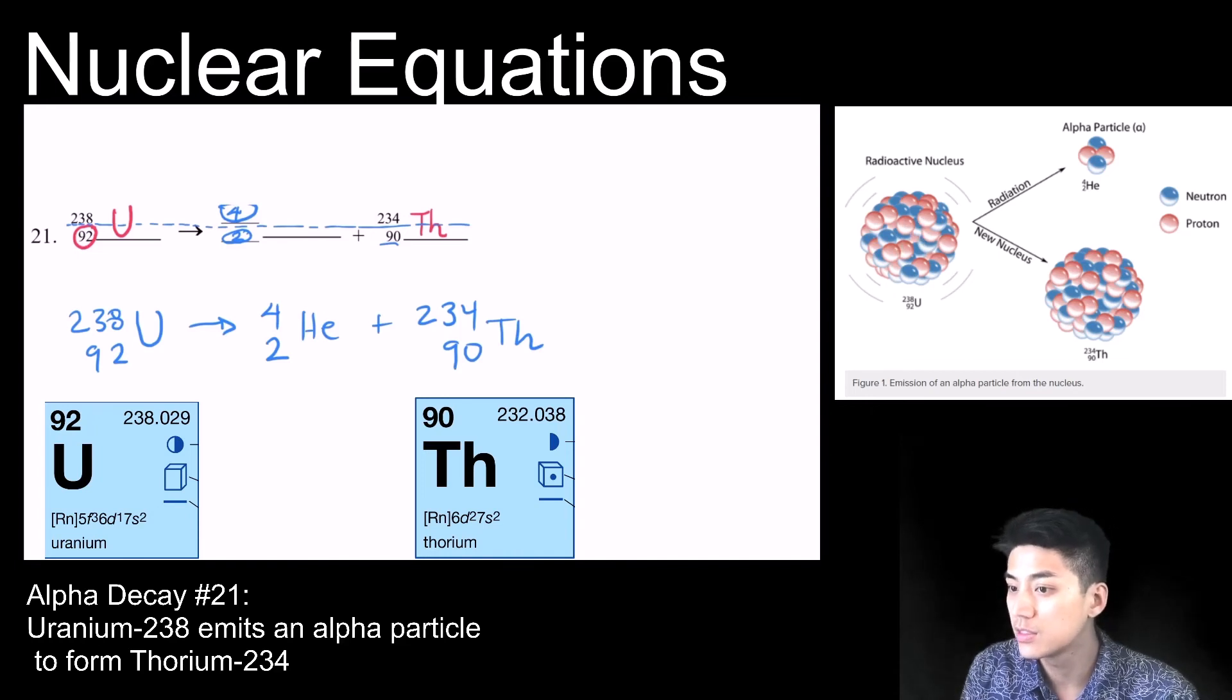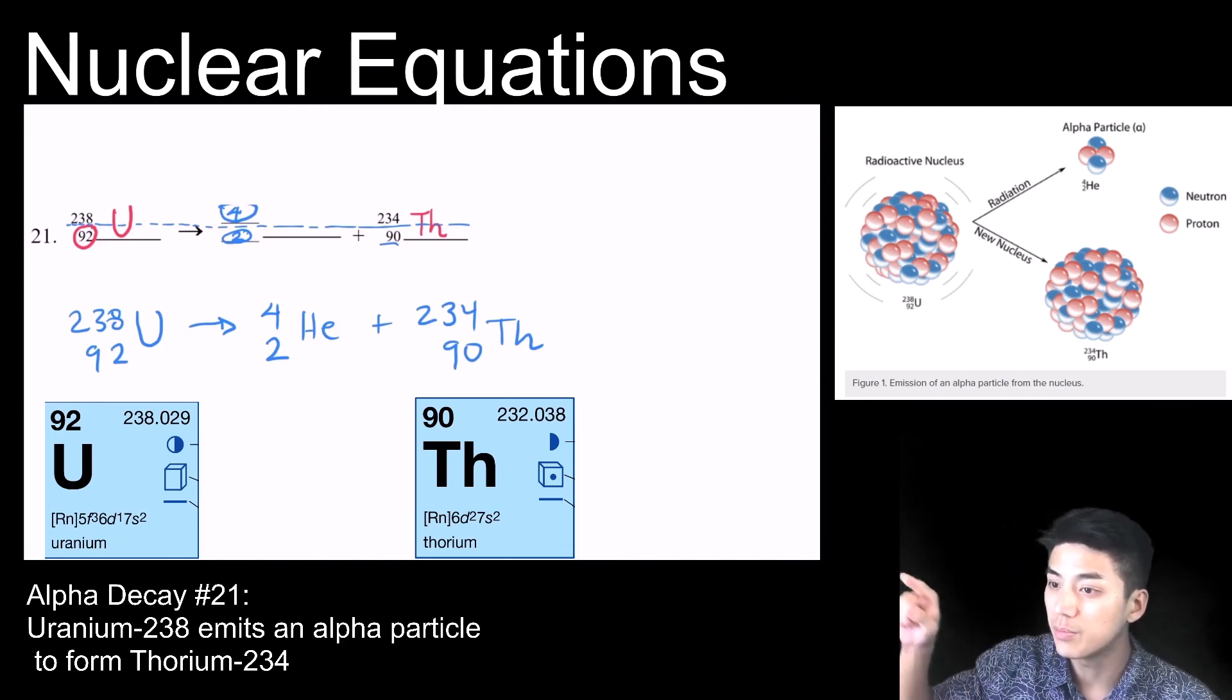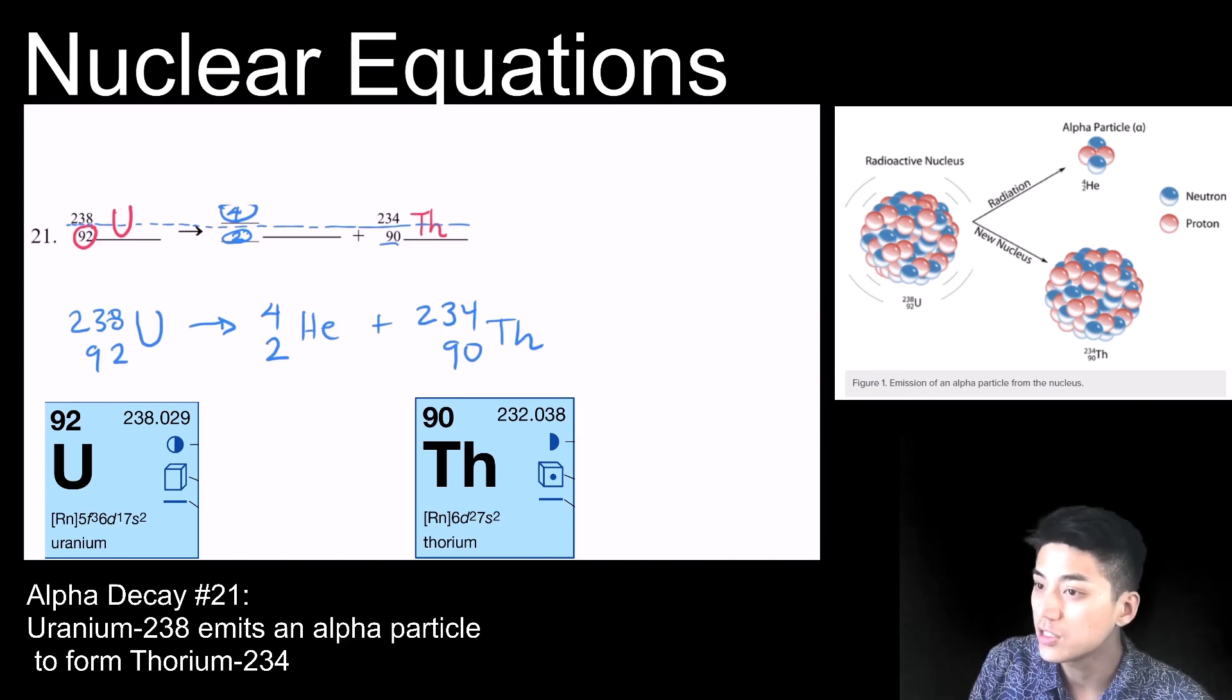And this type of uranium is unstable. So now it's going to fire off an alpha particle. So you see that line that's going above? That line says radiation. So it's going to shoot off two protons, two neutrons, a helium nucleus, an alpha particle.